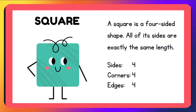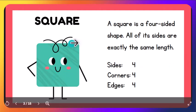Square. A square is a four-sided shape. All of its sides are exactly the same length. It has four sides, four corners, and four edges.